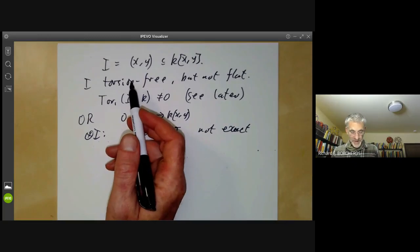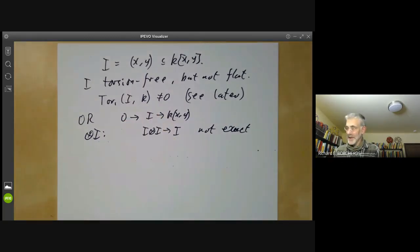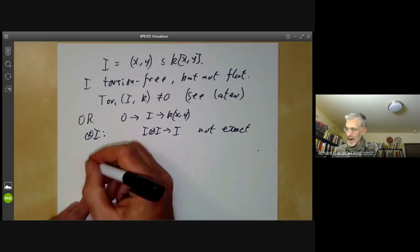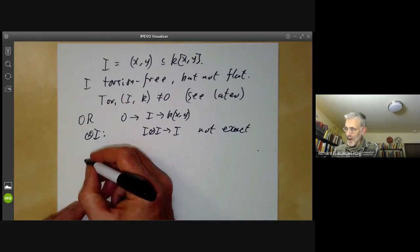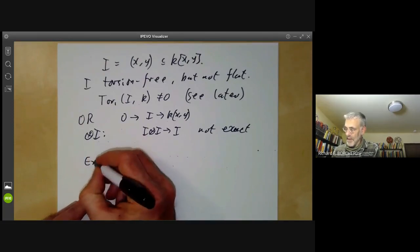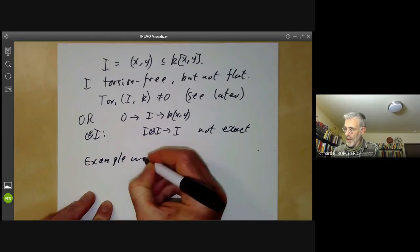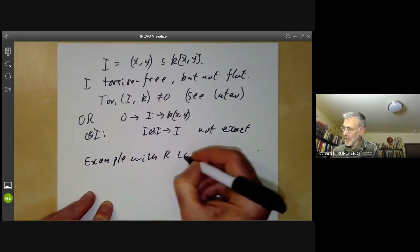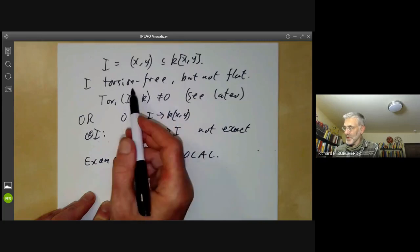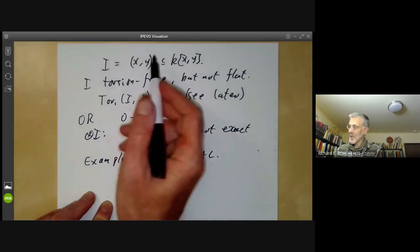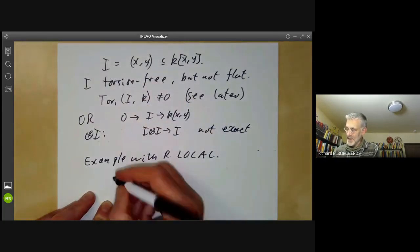Last time we showed that over local rings, things like flatness and projectiveness were all the same. So you could ask, is a torsion-free module over a local ring also flat? And the answer is no. We can take an example with R local of a module that's torsion-free but not flat.